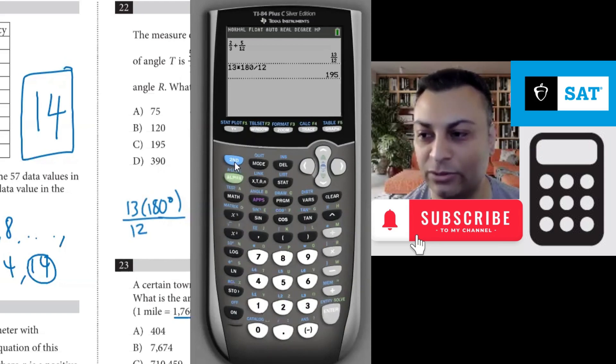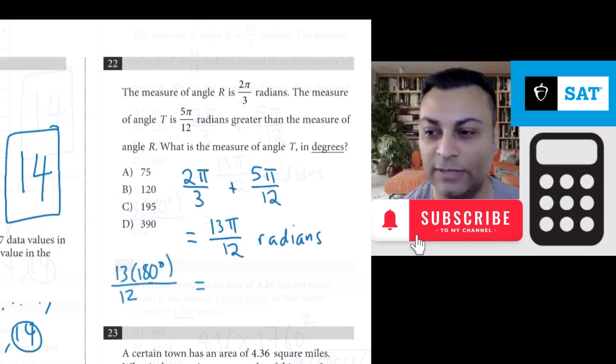Or the fraction way is better. Let's do that one. 13 times 180 over 12. You get 195. So the final answer is 195 degrees which is option C.